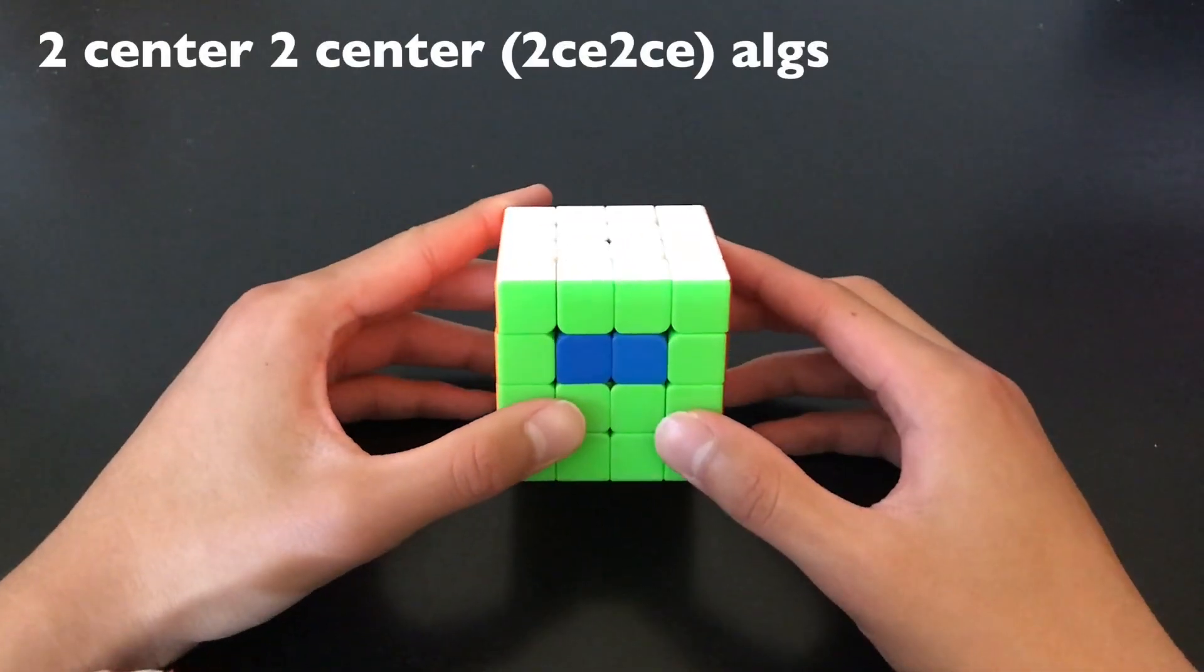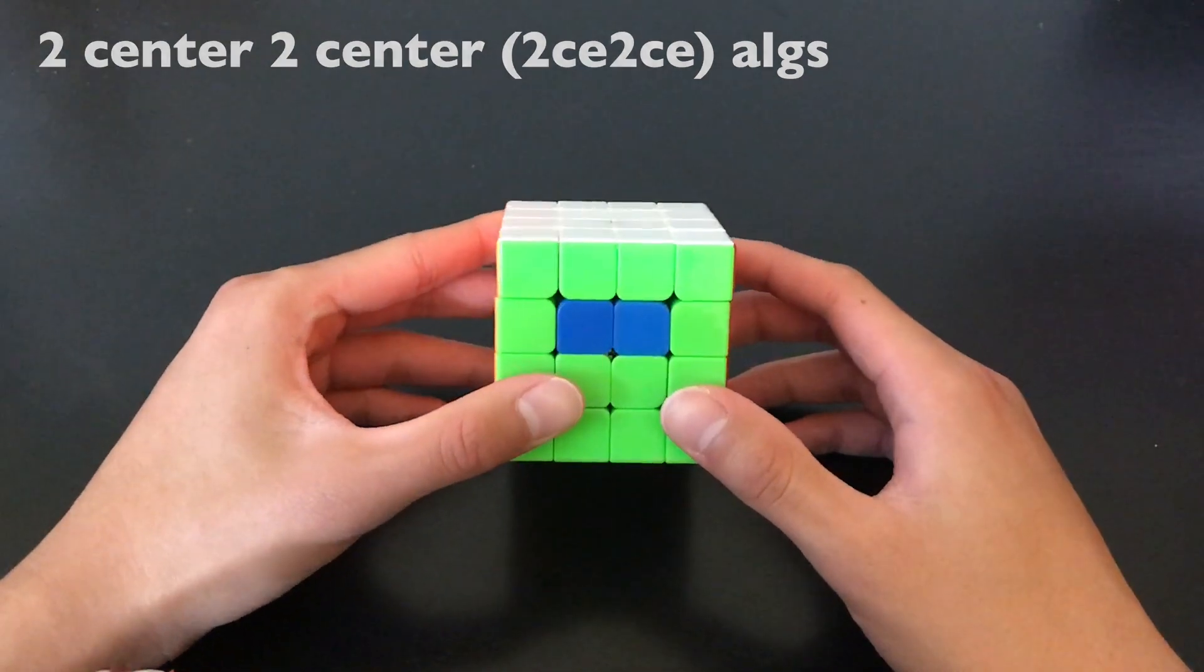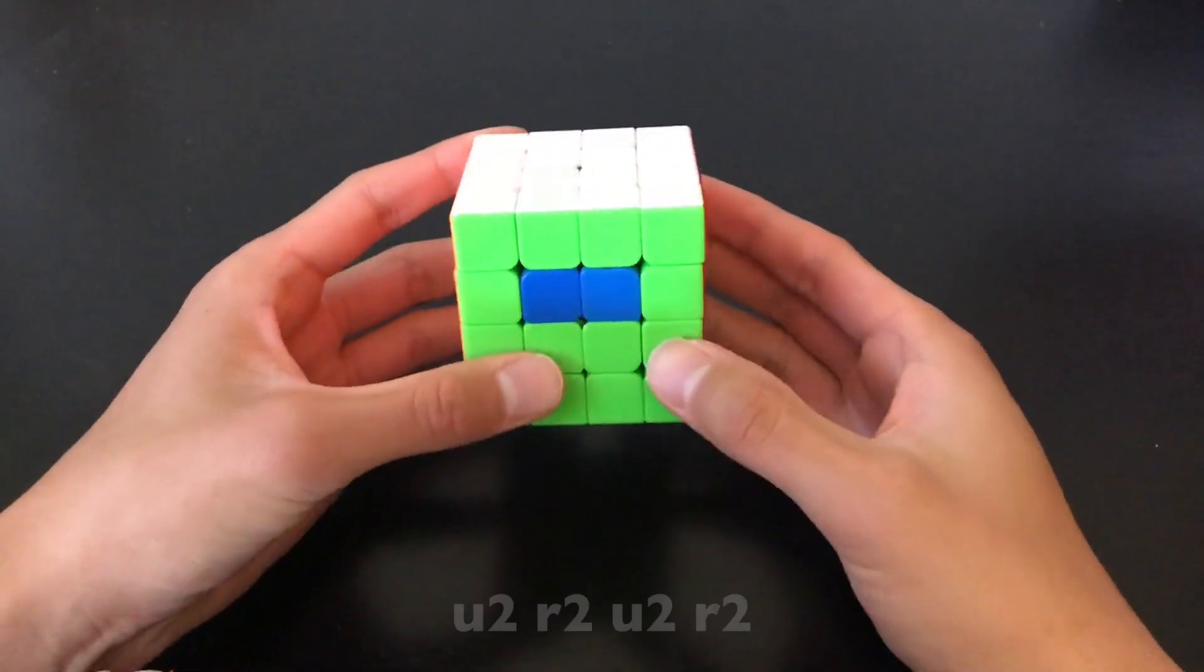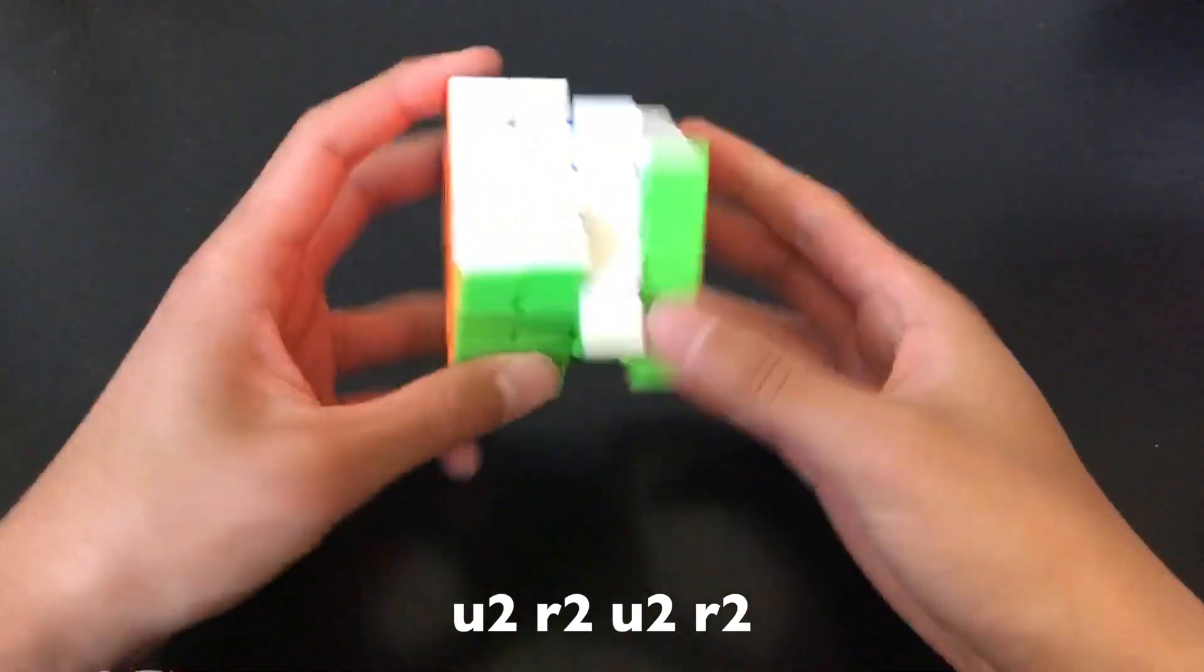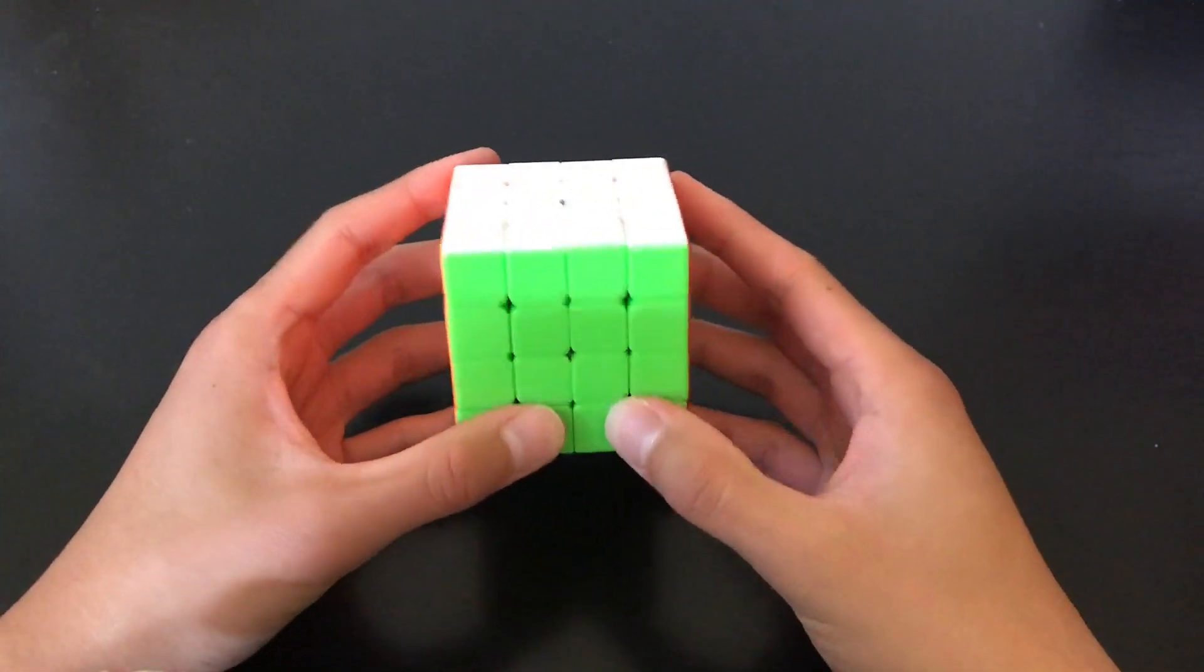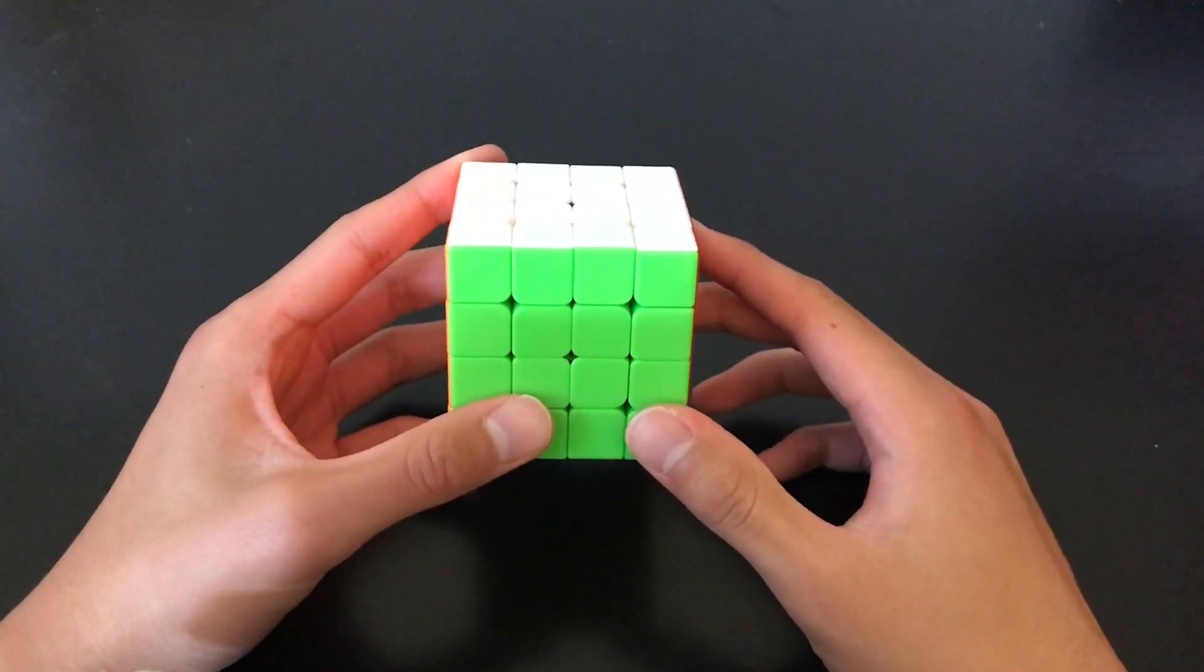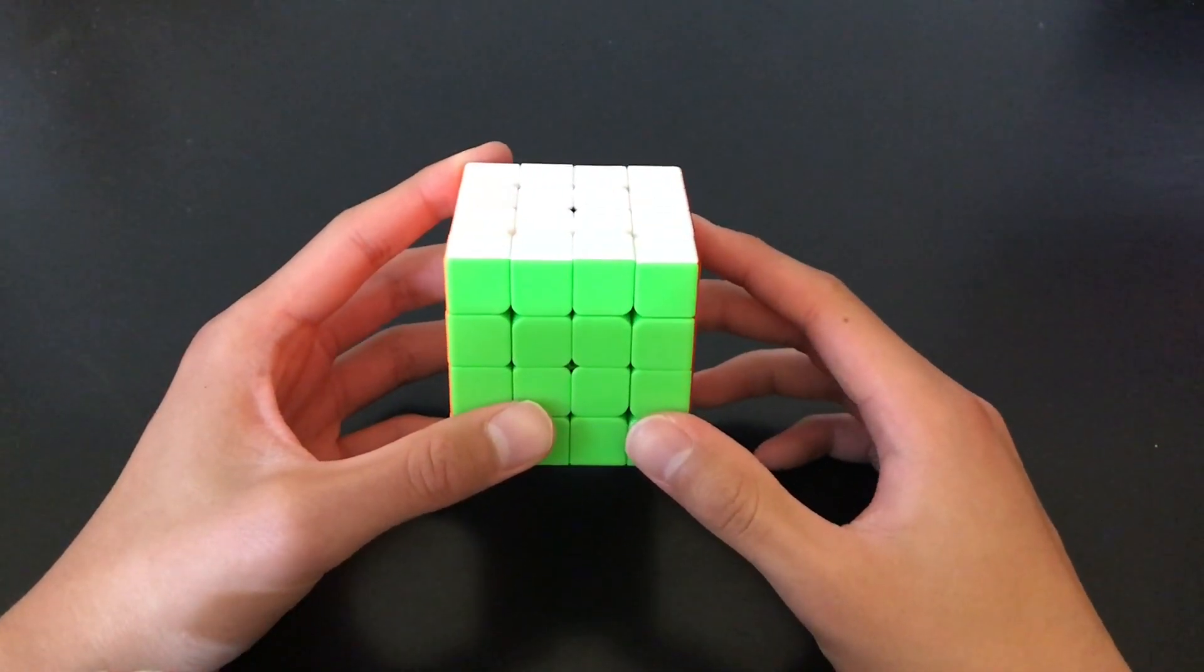Next, I will be talking about two-center, two-center algs. These refer to algs that swap two centers with another two. For example, U2 R2 U2 R2. These are useful because you can solve centers into their opposite spots and then fix them at the end with a two-center, two-center alg. I will have a full list of these algs in the description.